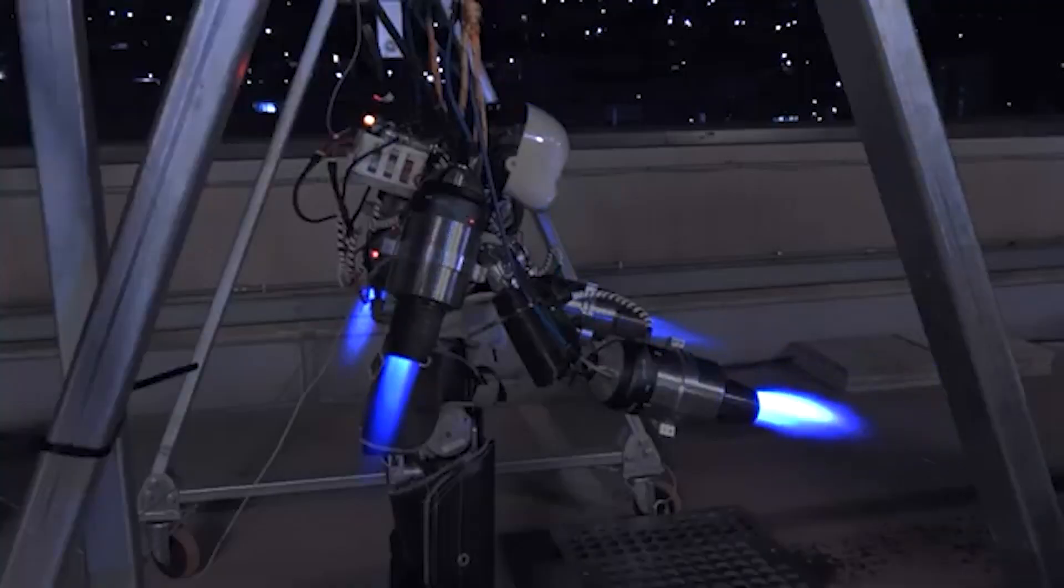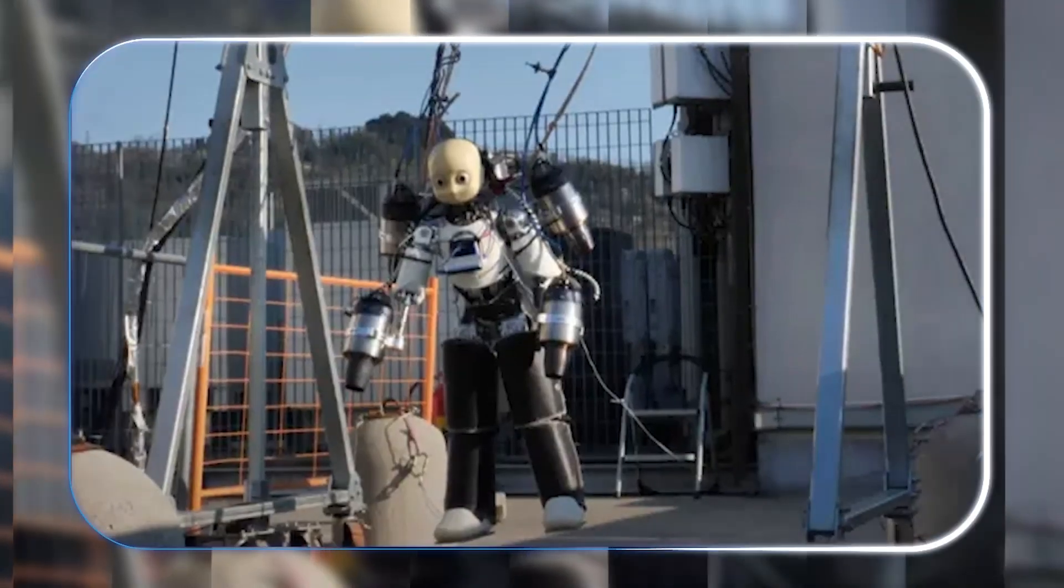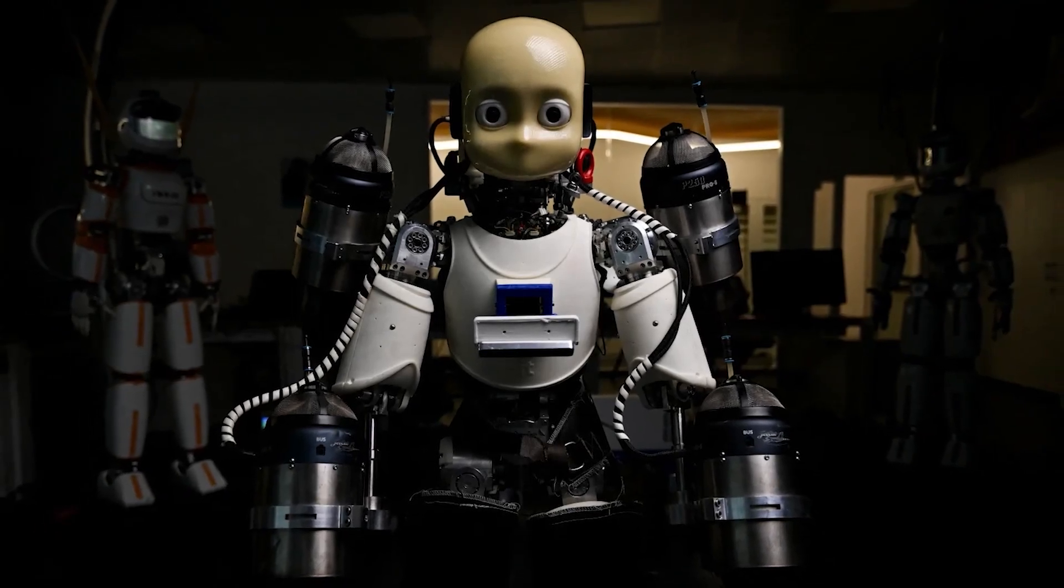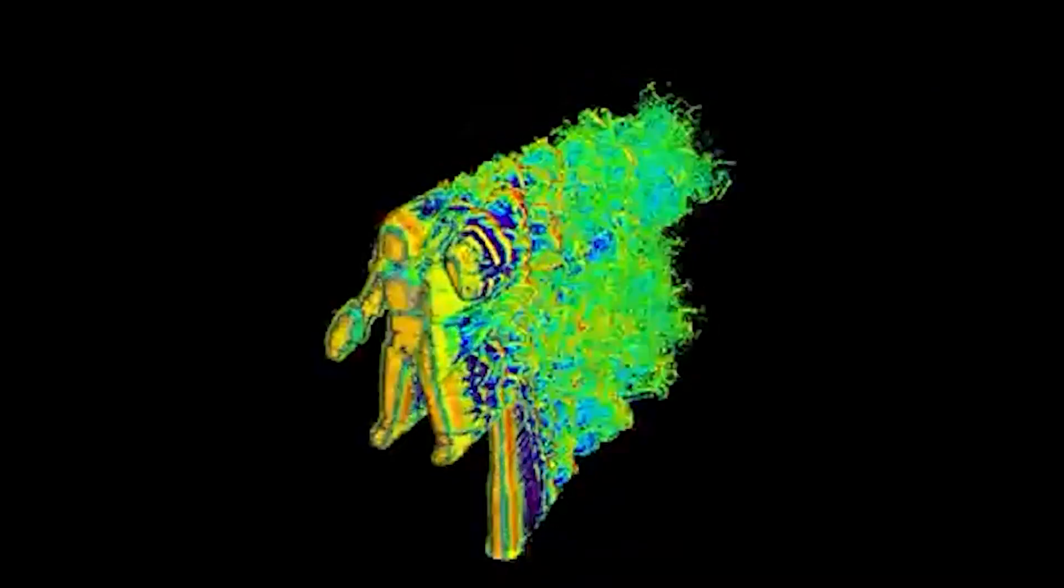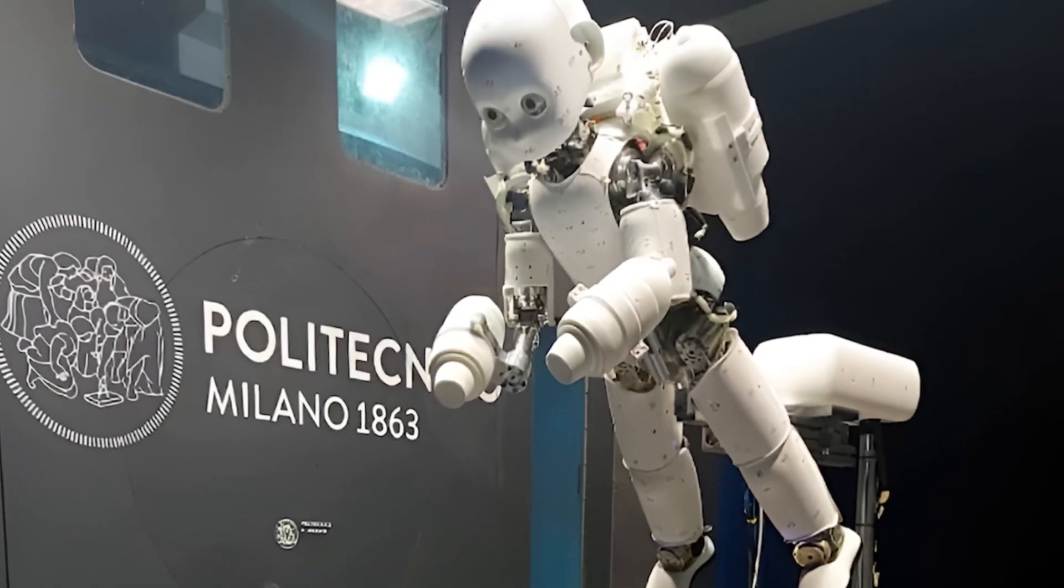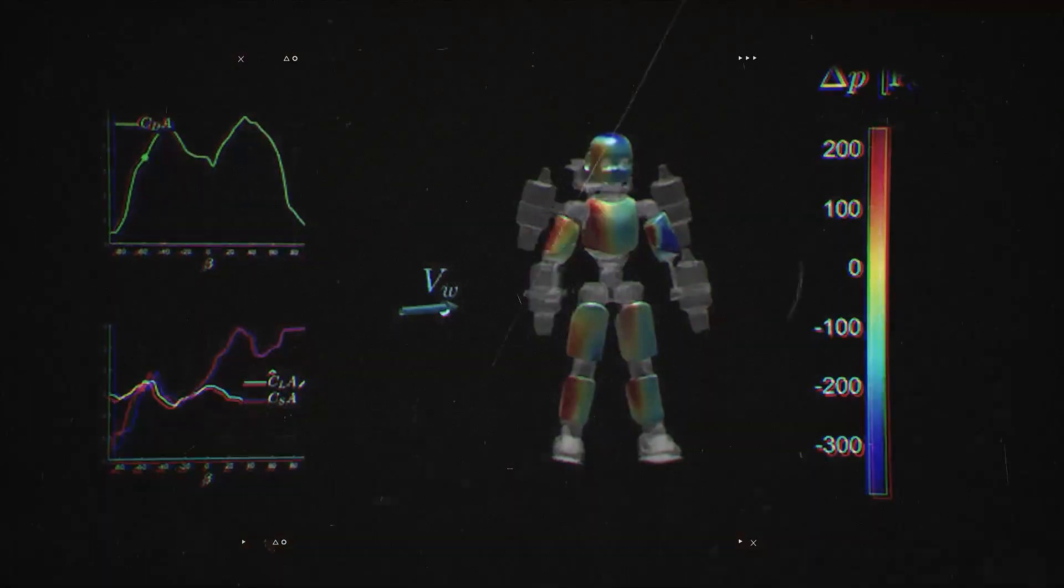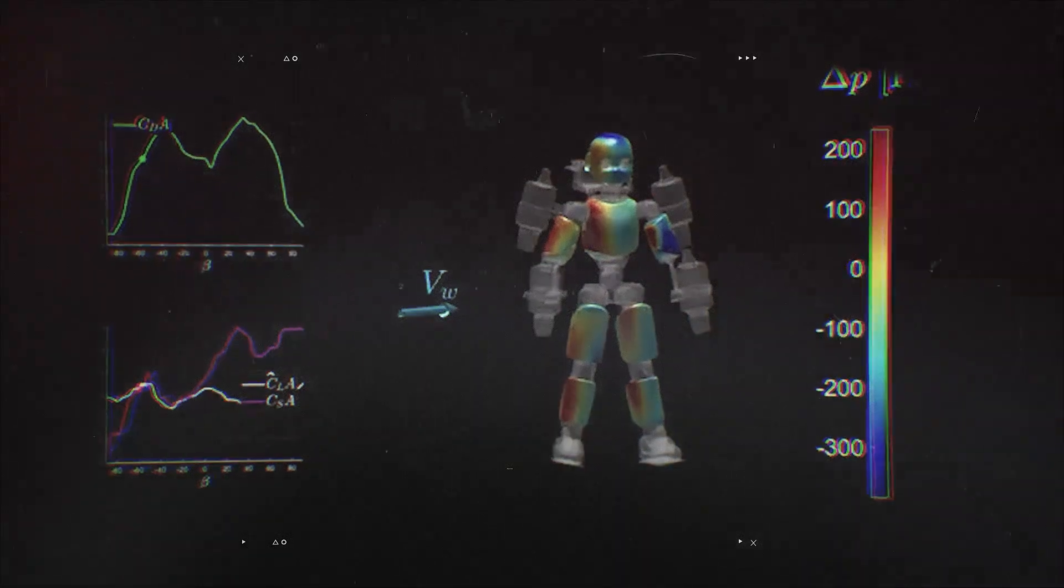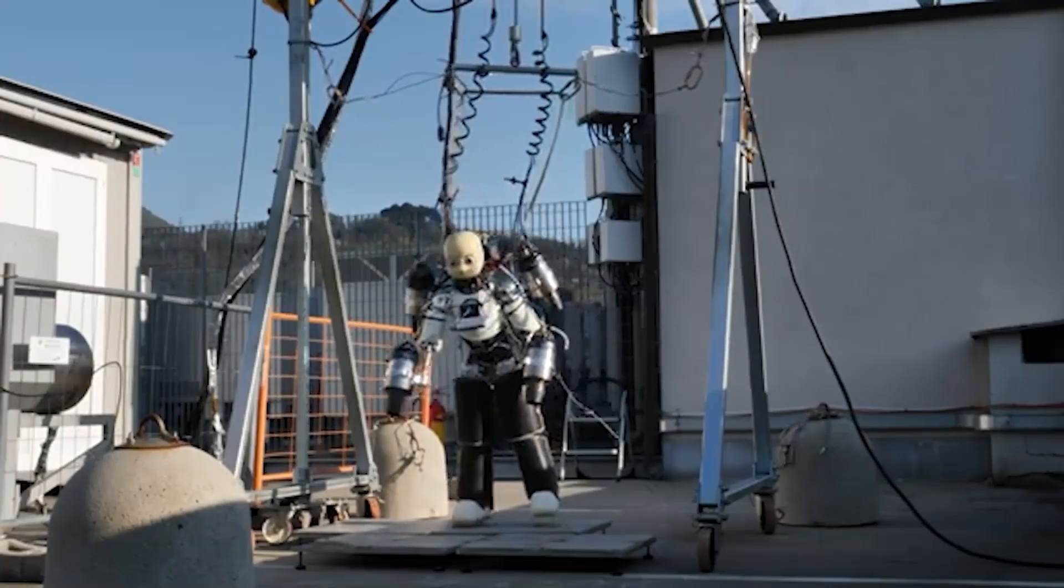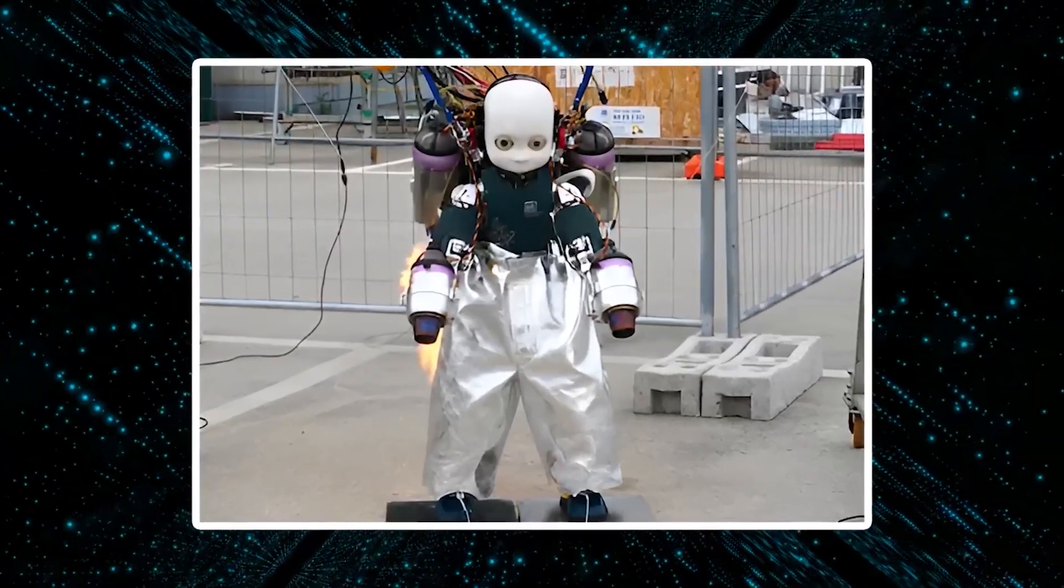Finally, if you thought humanoid robots were impressive walking around, wait until you see one fly. Meet Iron Cub 3, the world's first jet-powered humanoid robot, developed by Italy's Institute of Technology. No, this isn't a drone with legs. It's a full-fledged humanoid equipped with four jet engines, two mounted on its arms and two on a backpack, capable of lifting off the ground and hovering with AI-controlled stability.